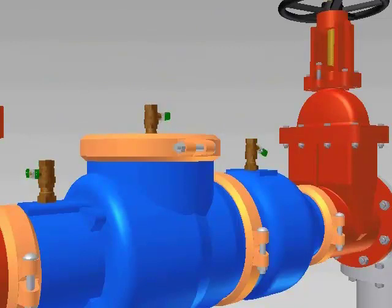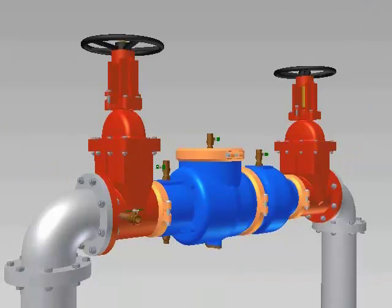Close test cocks. Open your inlet valve slowly to pressurize the assembly. Inspect for any leaks. Open and then close test cocks to bleed air from the assembly.